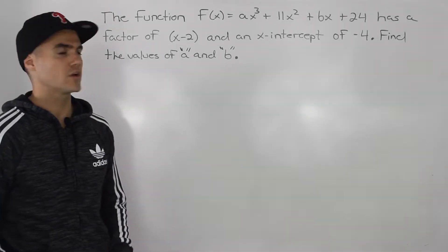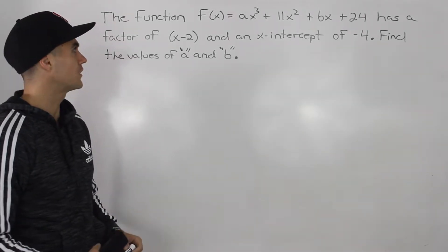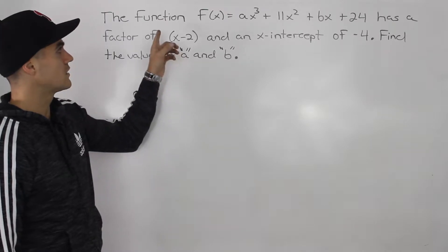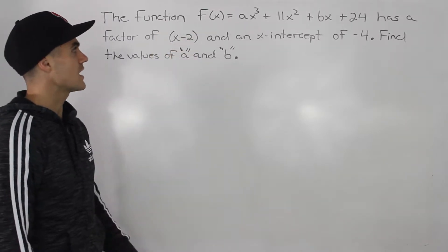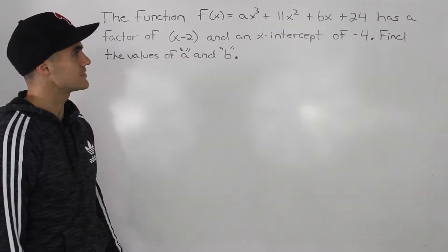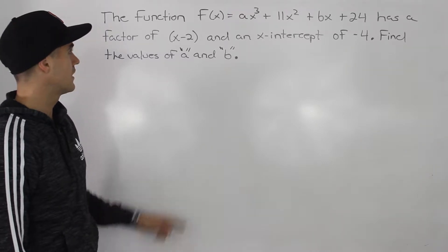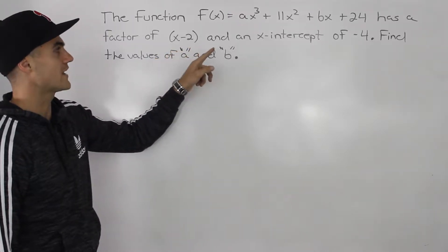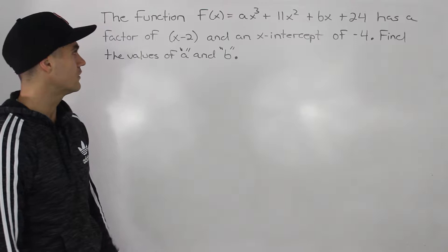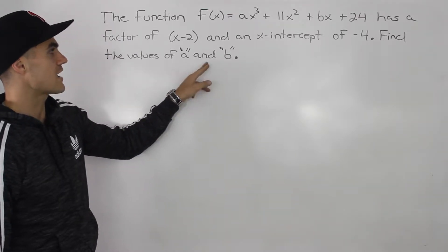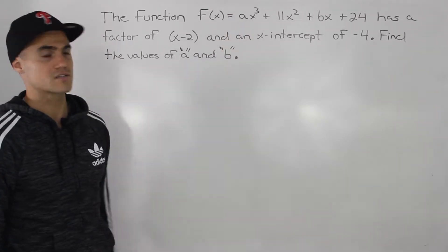Welcome back, everybody. Patrick here. Moving on to another question for polynomial functions. So the function f(x) equals ax cubed plus 11x squared plus bx plus 24 has a factor of x minus 2 and an x-intercept of negative 4. Find the values a and b, so the constants a and b.